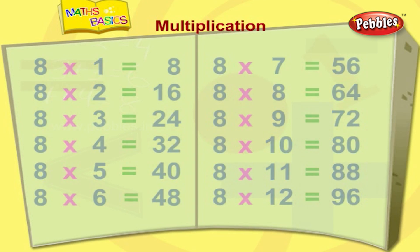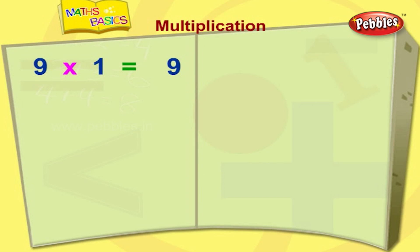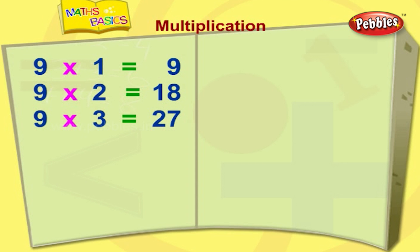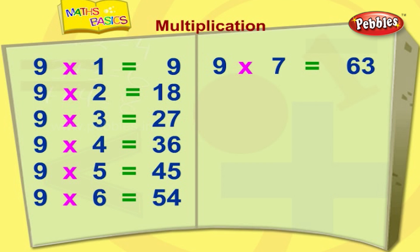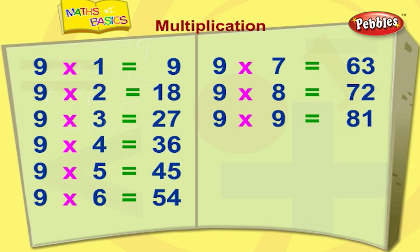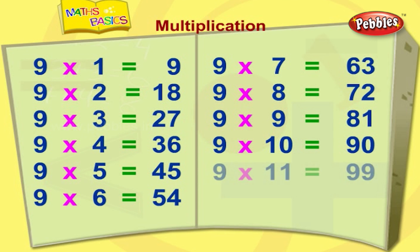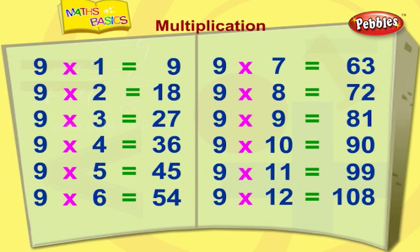Nine ones are nine. Nine twos are eighteen. Nine threes are twenty-seven. Nine fours are thirty-six. Nine fives are forty-five. Nine sixes are fifty-four. Nine sevens are sixty-three. Nine eights are seventy-two. Nine nines are eighty-one. Nine tens are ninety. Nine elevens are ninety-nine. Nine twelves are one hundred and eight.